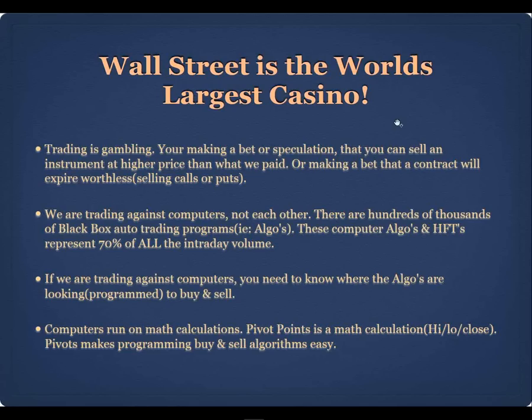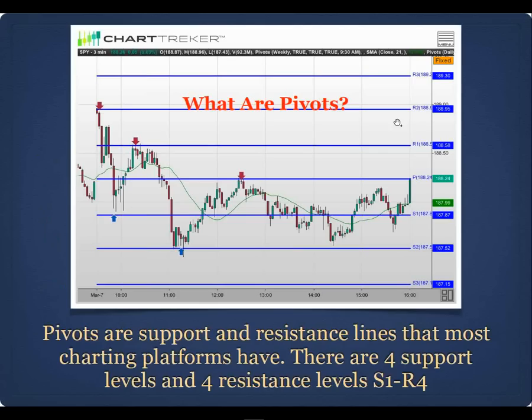What are pivot points? Here is a three-minute chart of the SPY. The lines marked R1, R2, R3 are first, second, and third resistance. S1 is first support, S2 is second support, S3 is third support. Pivot points are support and resistance lines that your charting software automatically draws for you. These are daily pivots based on the previous day's high, low, and close.